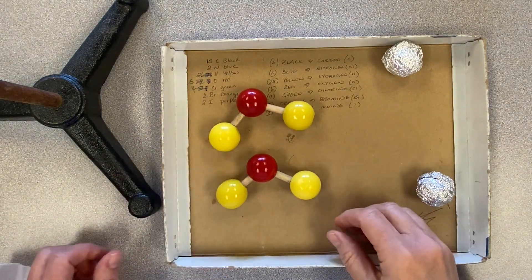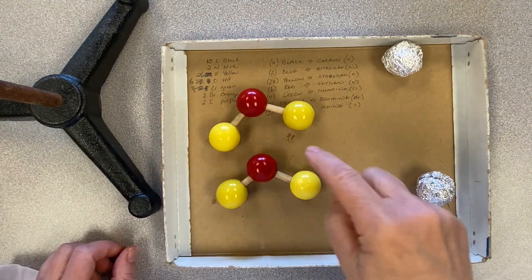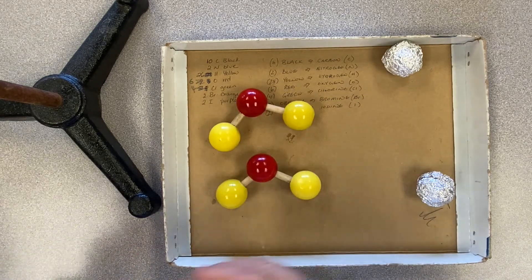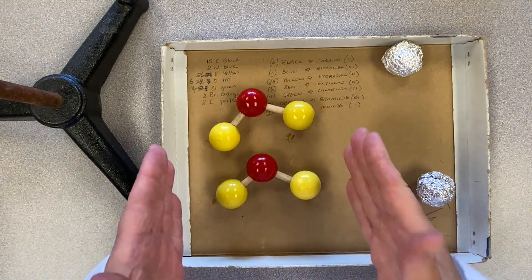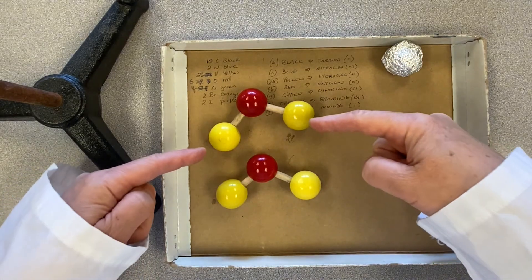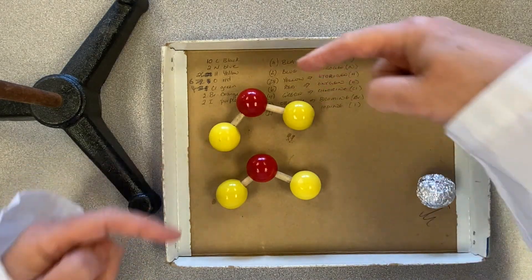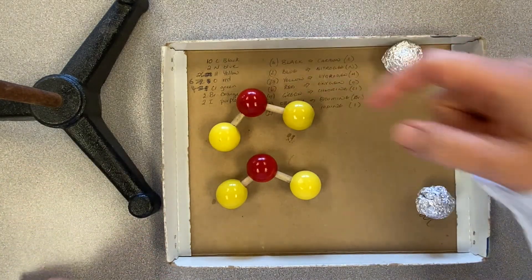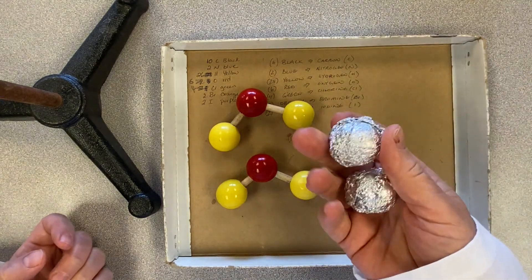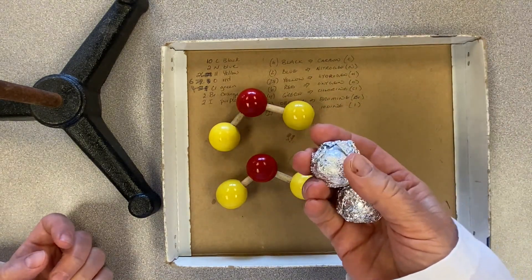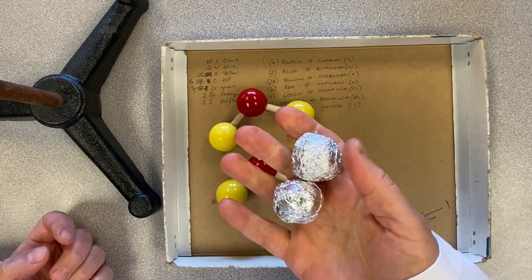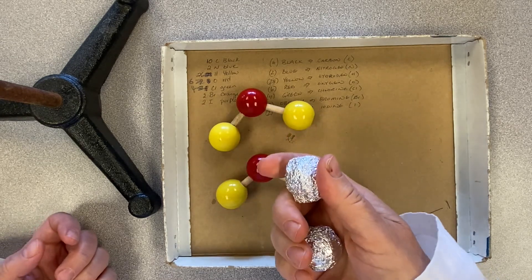These represent water molecules, H₂O. Because of the bend, these molecules, which should have no charge, have a slightly positive end here and a slightly negative end there. When I put sodium — the element, the metal — in the water, we have a very interesting reaction.